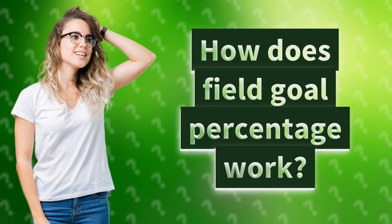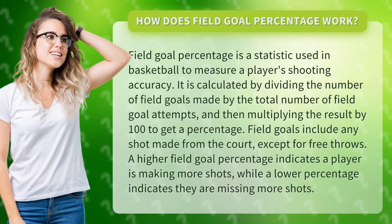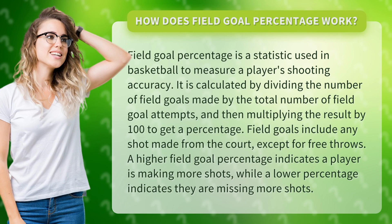How does field goal percentage work? Field goal percentage is a statistic used in basketball to measure a player's shooting accuracy. It is calculated by dividing the number of field goals made by the total number of field goal attempts, and then multiplying the result by 100 to get a percentage.